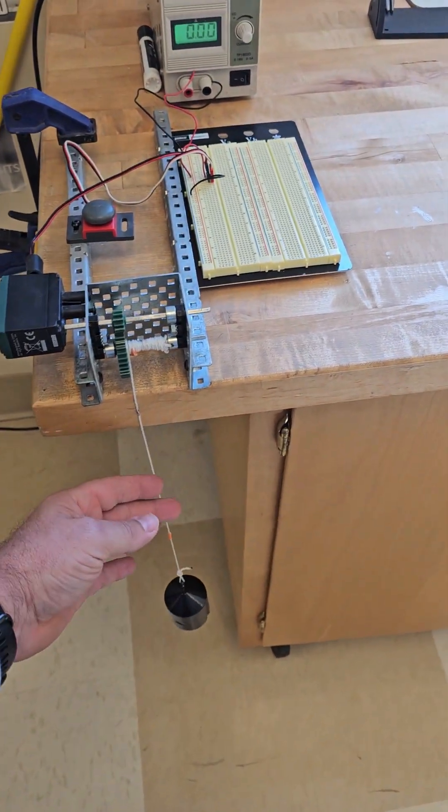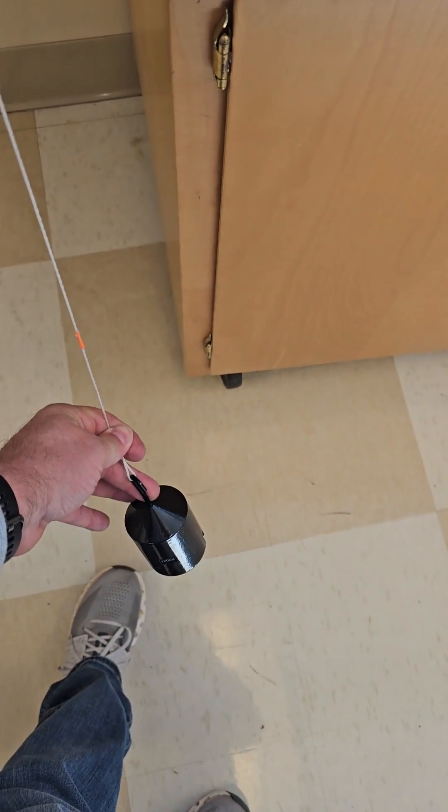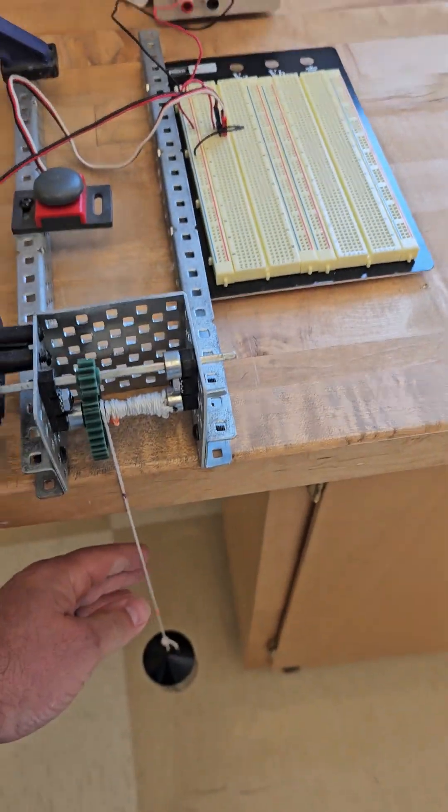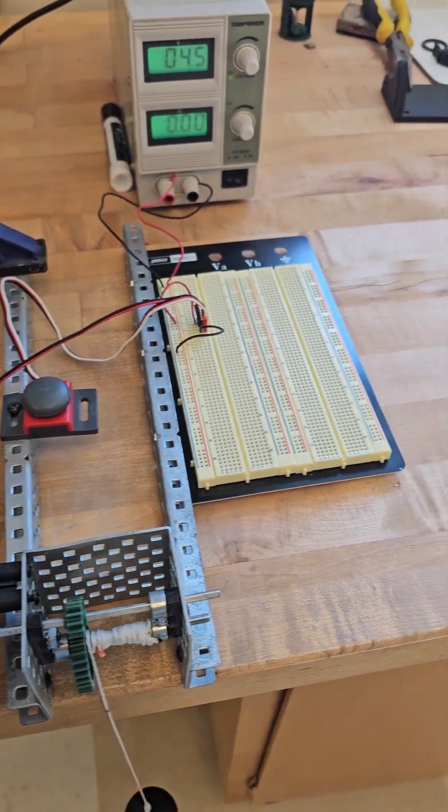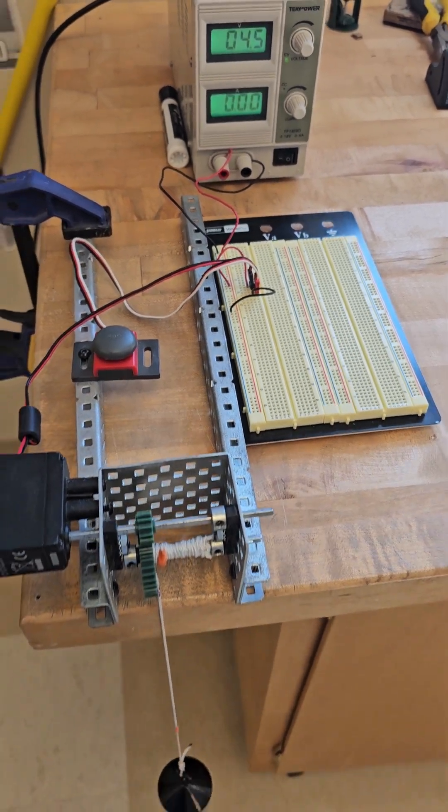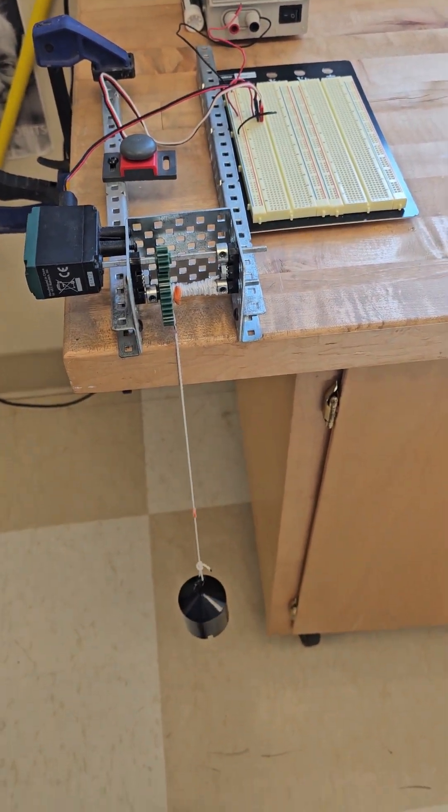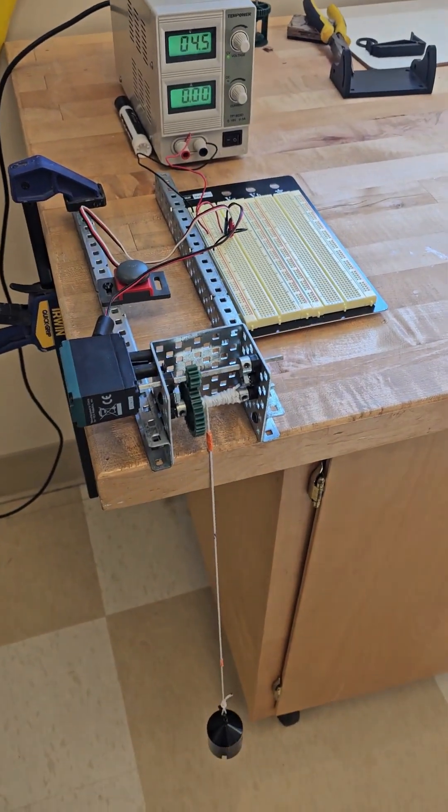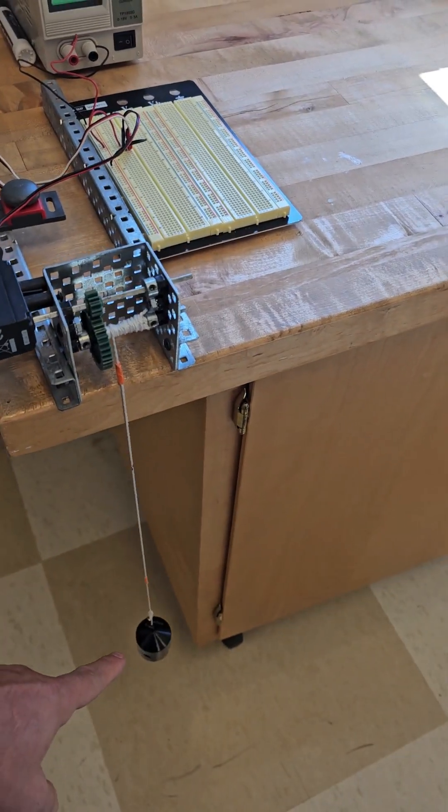Okay, so when we switch it over to the heavier weight, now I have the thousand gram weight there. We're going to go ahead and run this again, and it looks like we're at about 0.18 amps to lift that one.